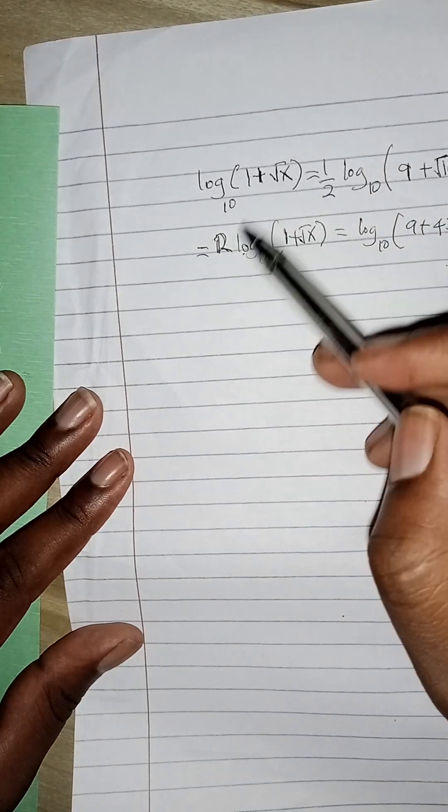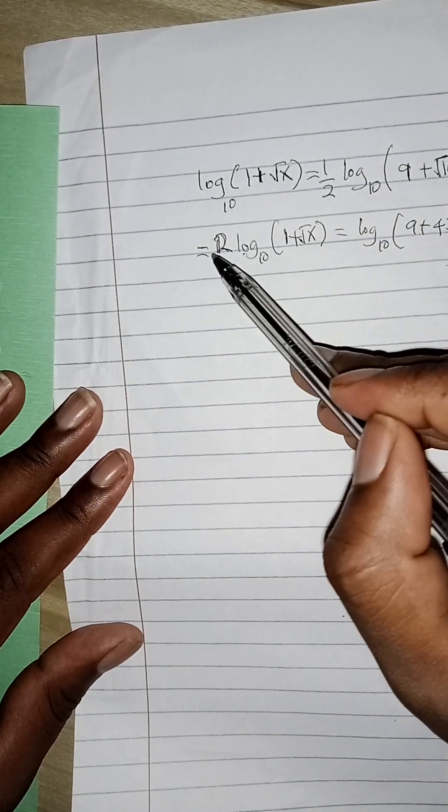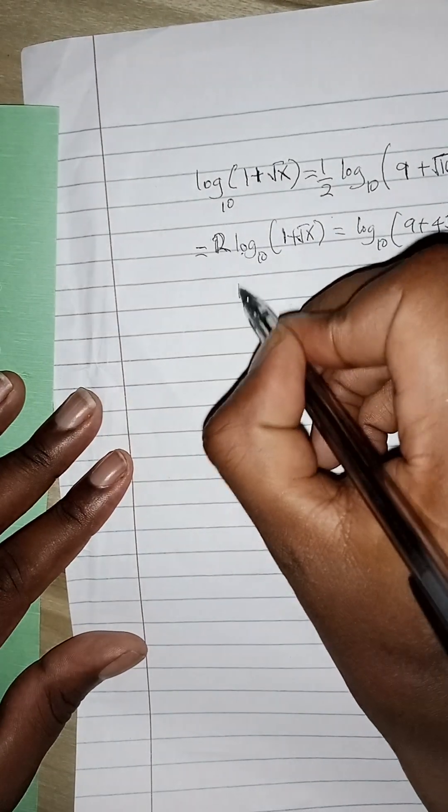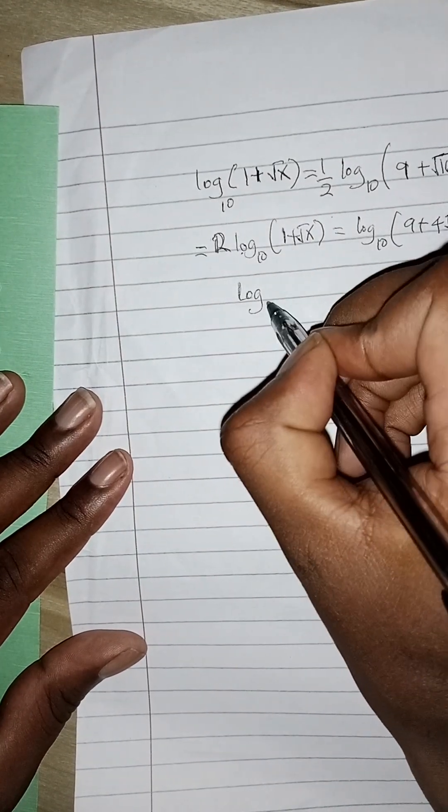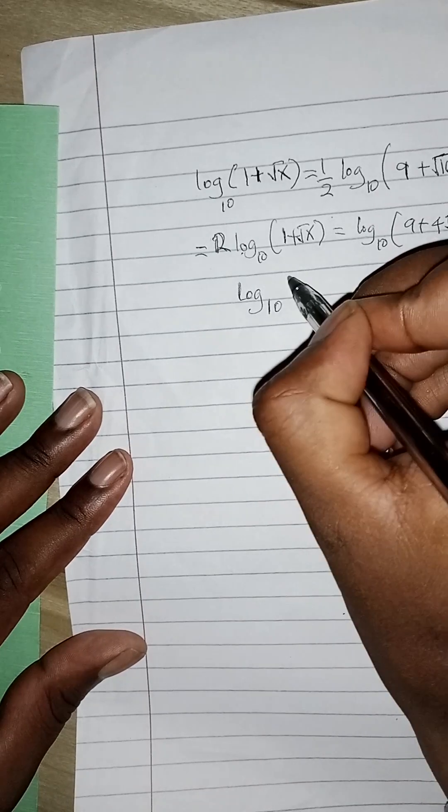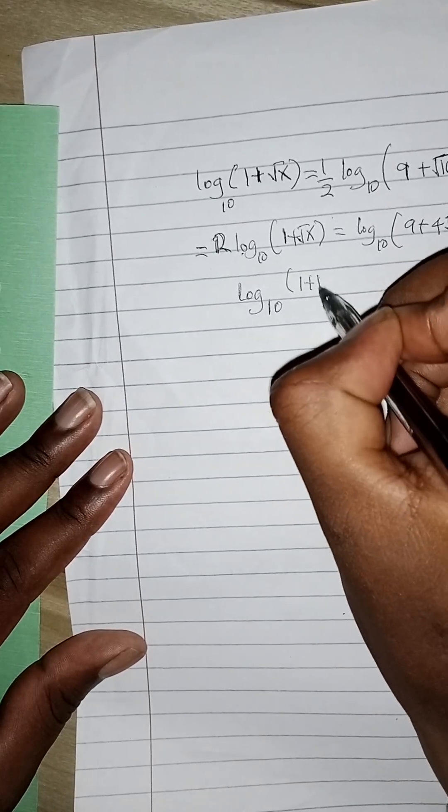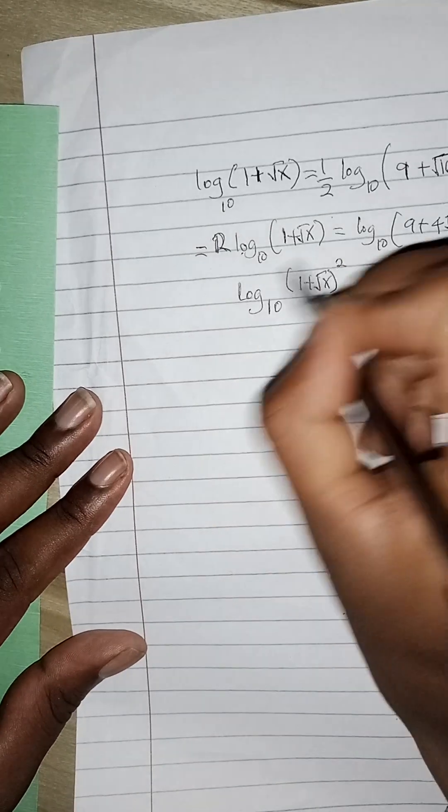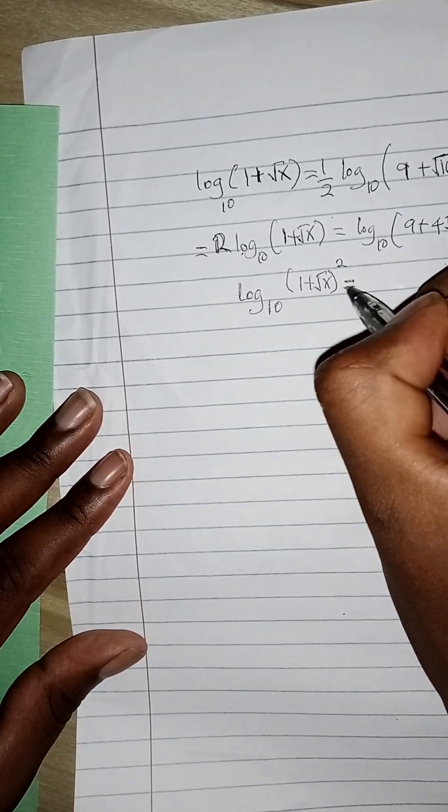So now I'm going to use the power rule to remove this two, so I'm going to get log to base 10 to bracket (1 plus root of x) squared. The power rule, remember in the previous video I explained what the power rule is.